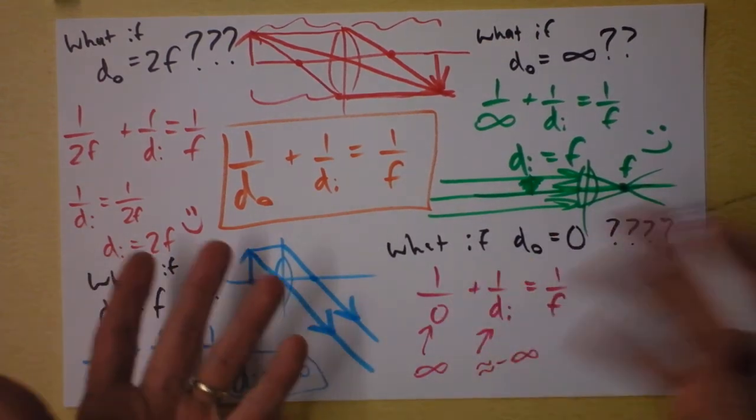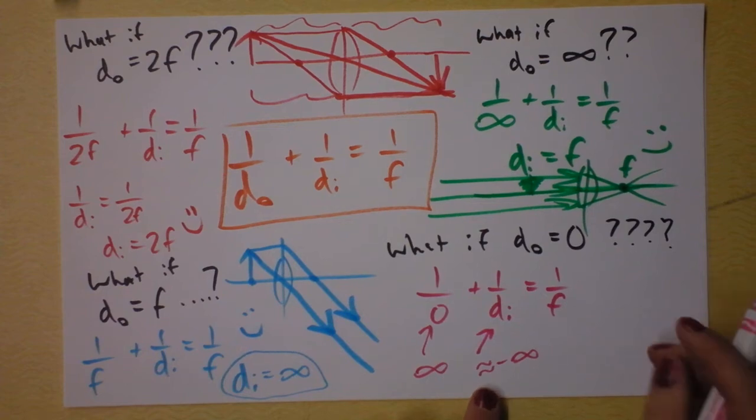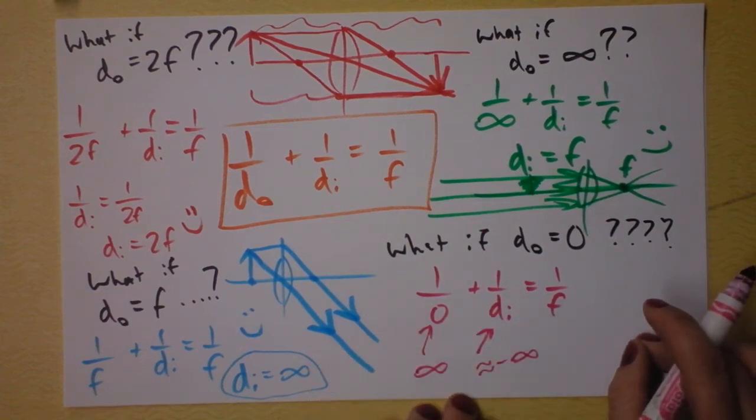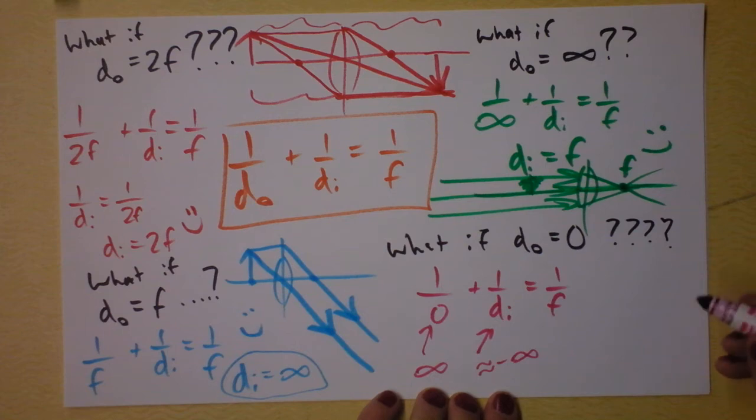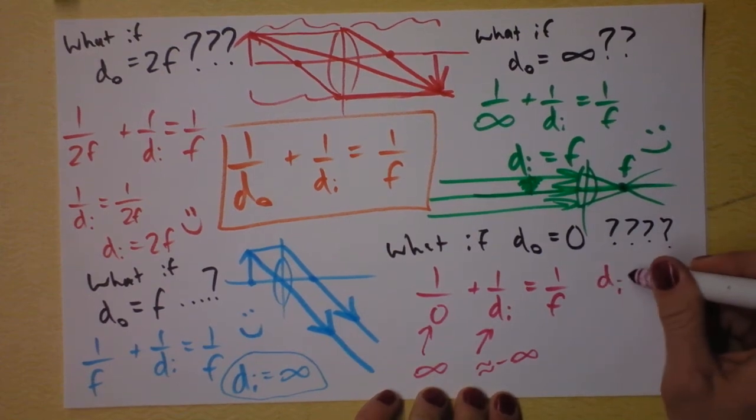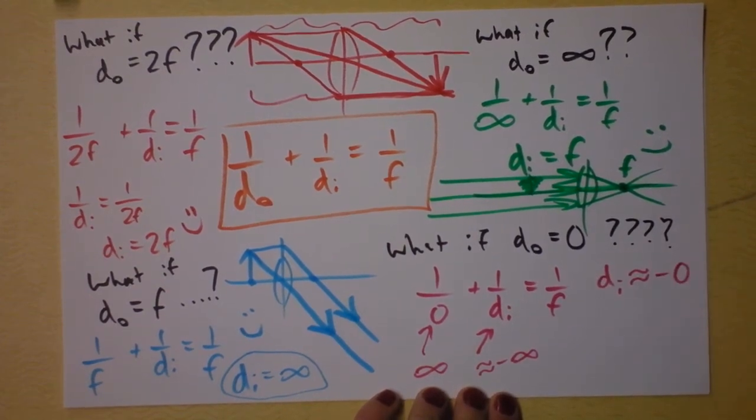Wait a second. If I'm going to make this negative infinity, I need to divide by negative zero. You deal with that. I'm going to say that the distance of the image is approximately at negative zero.